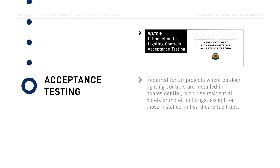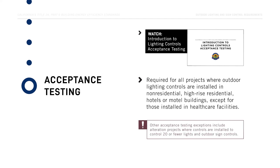To comply with the Energy Code, acceptance testing is required for all projects where outdoor lighting controls are installed in non-residential, high-rise residential, hotels, or motel buildings, except for those installed in healthcare facilities. Other acceptance testing exceptions include alteration projects where controls are installed to control 20 or fewer lights, and outdoor sign controls.